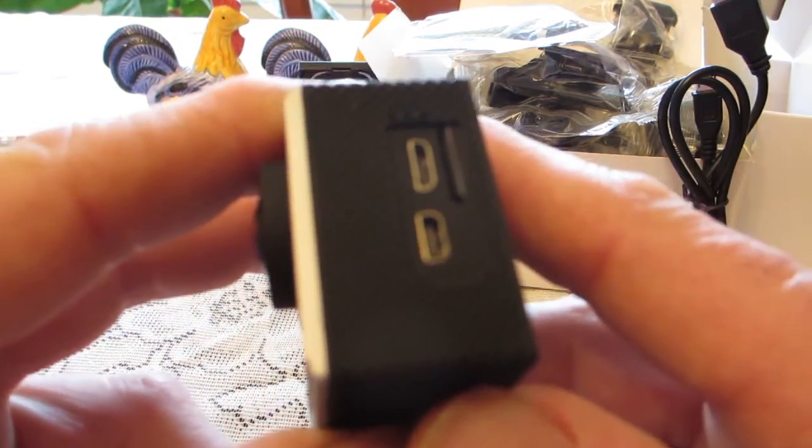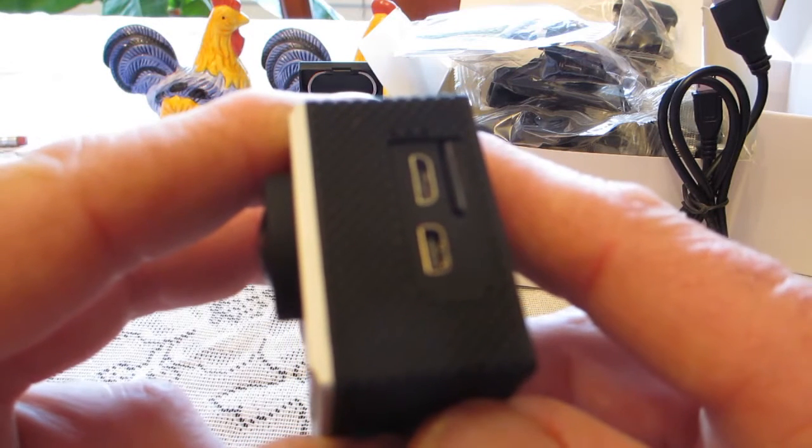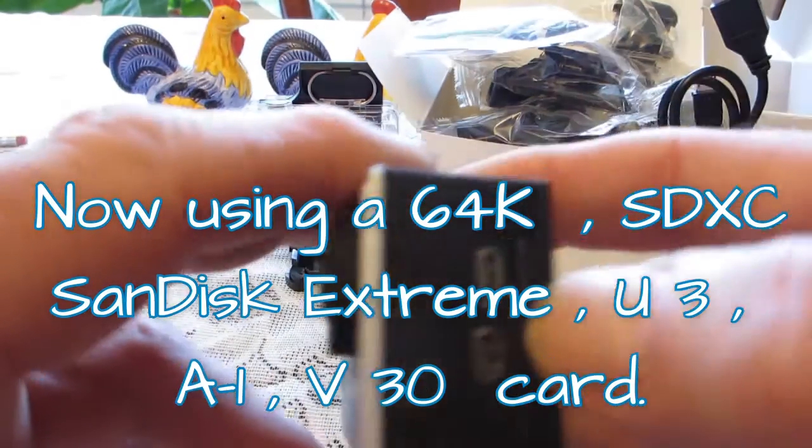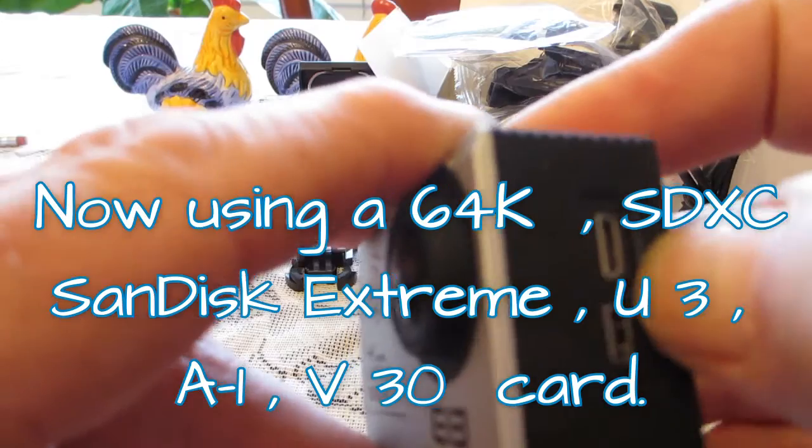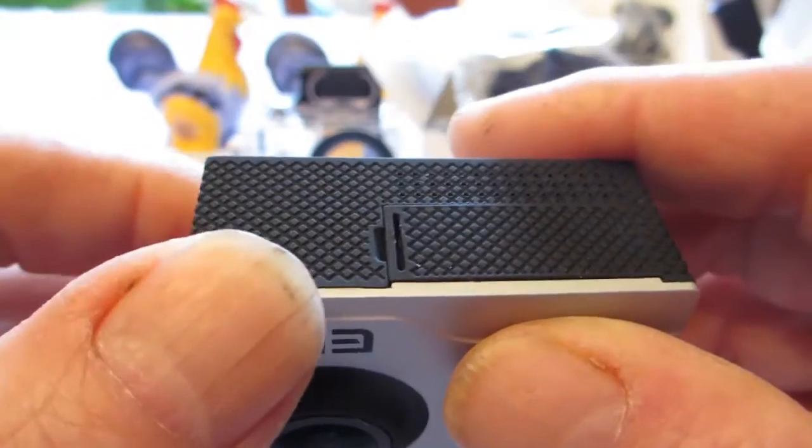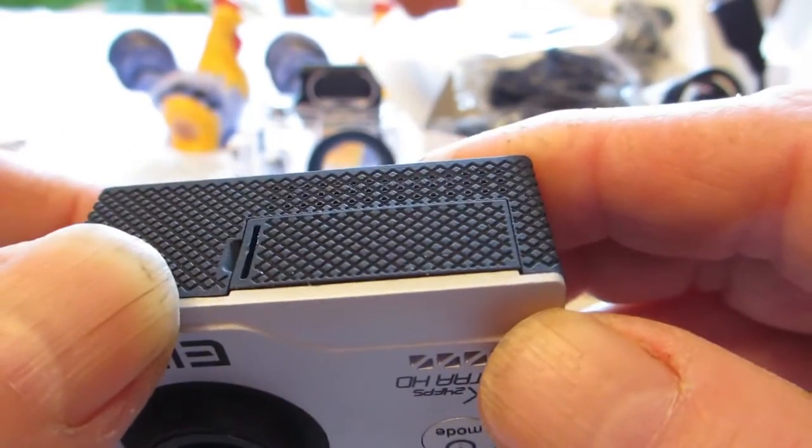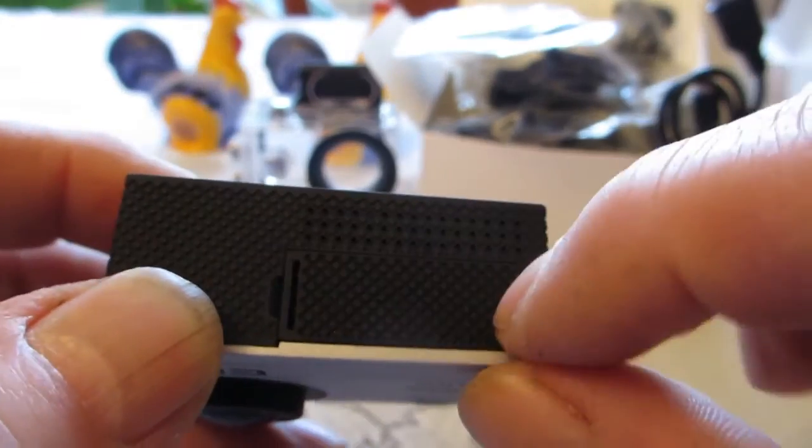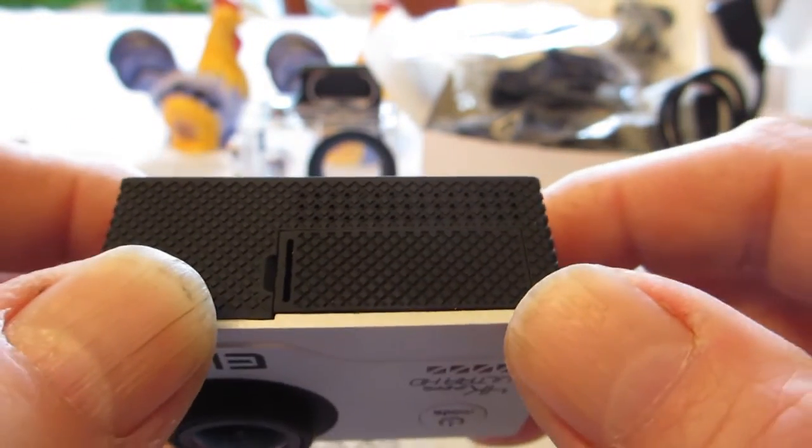On this side you've got your HDMI port, your micro USB, and also your SD card slot. On the bottom here is the access to your battery. It's a little fiddly thing, you've got to put your nail down like most action cameras. And when you turn it on, let's see what we see.